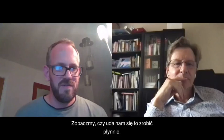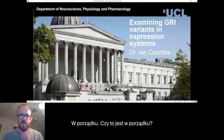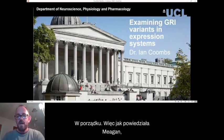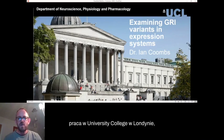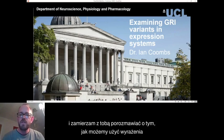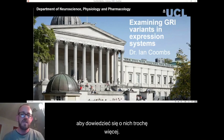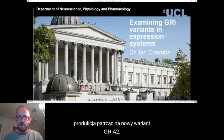Okay, let's see if we can do this smoothly. Is that coming through okay? Great. So as I said, I'm Ian Combs. I'm an electrophysiologist working at University College London, and I'm going to talk to you about how we can use expression systems to examine the properties of Grin variants to understand a bit more about them. I'm going to start just talking a little bit generally about the technique and also some data that we've managed to produce looking at a novel Grin 2 variant.